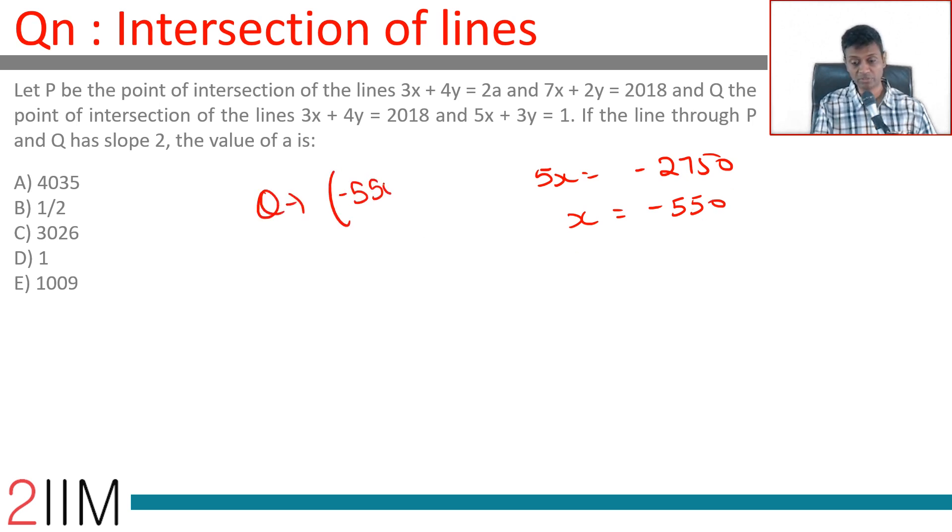Quite brilliant. Now we can find P similarly in terms of a, but we know that PQ has a slope of 2. We can take a slightly different approach: form equation of PQ.